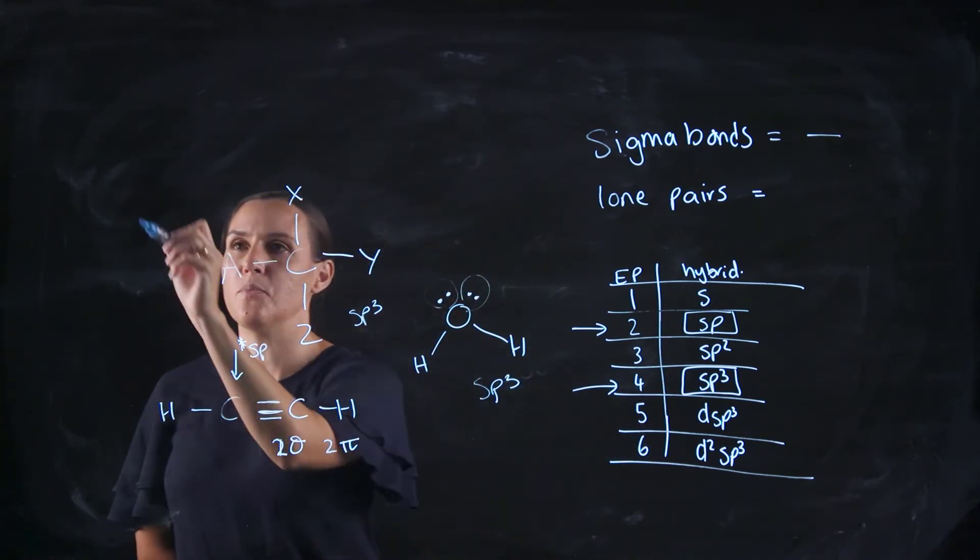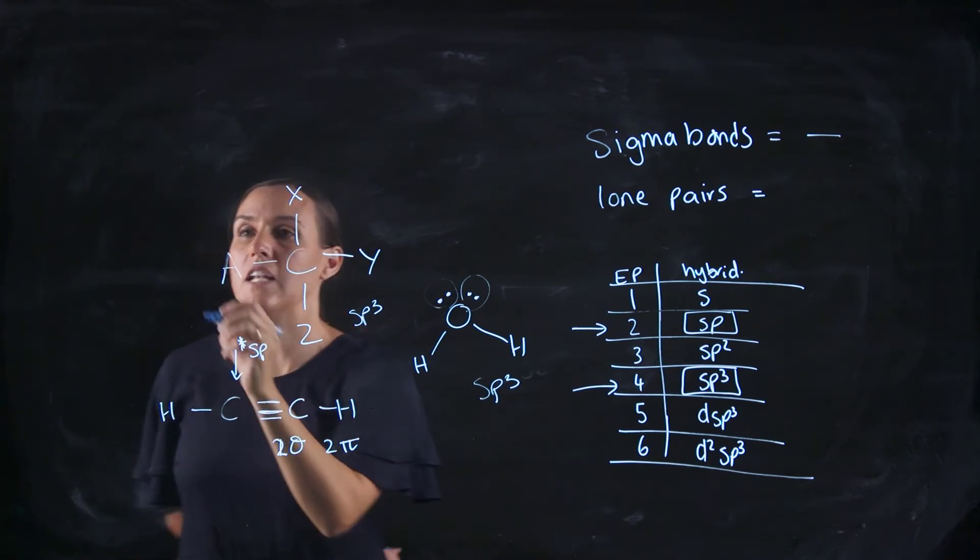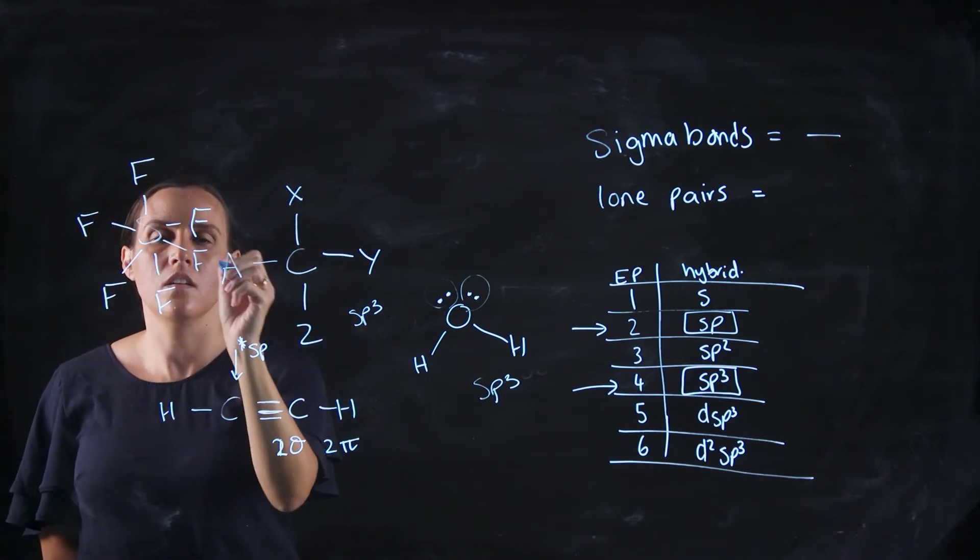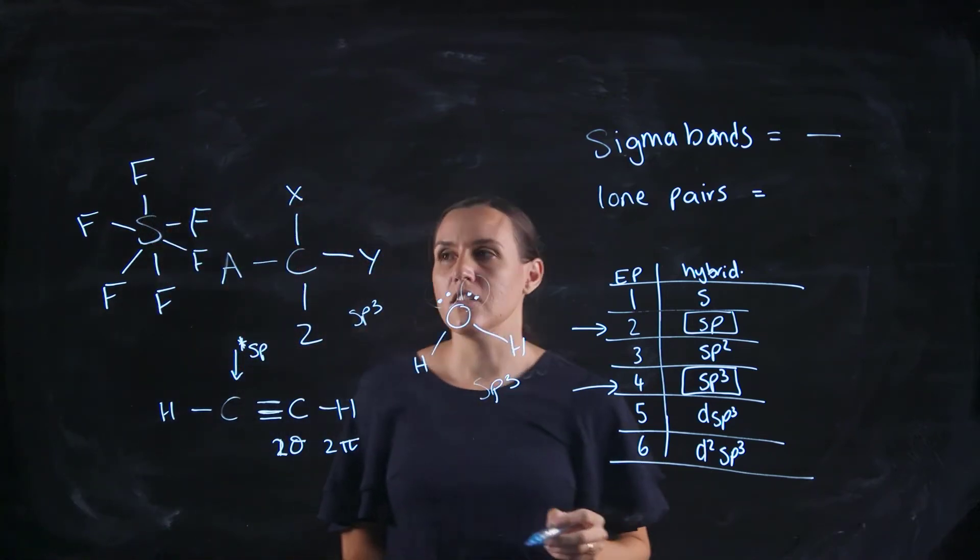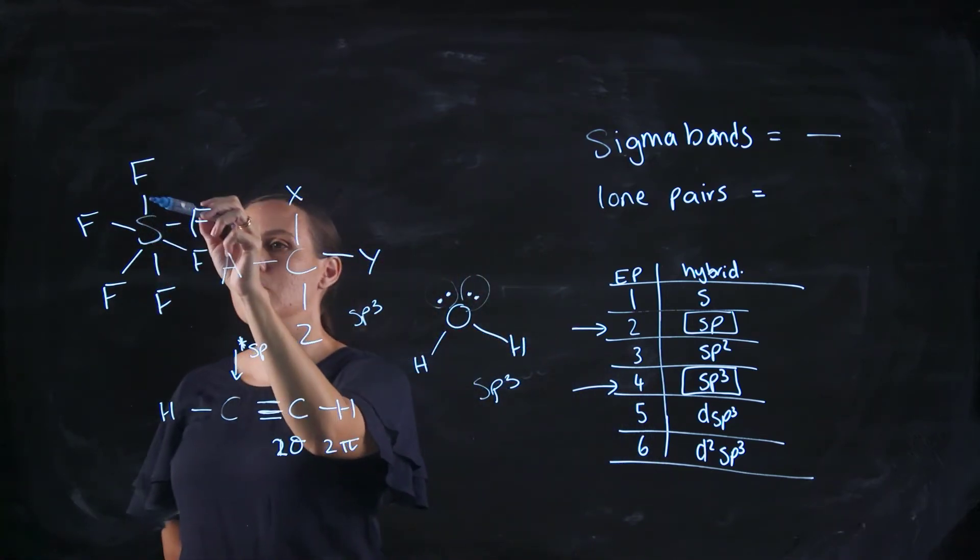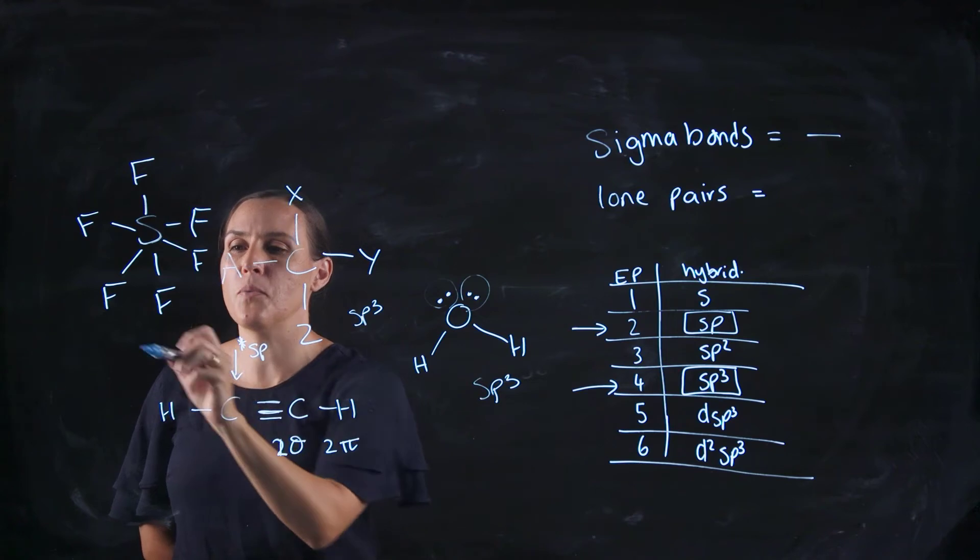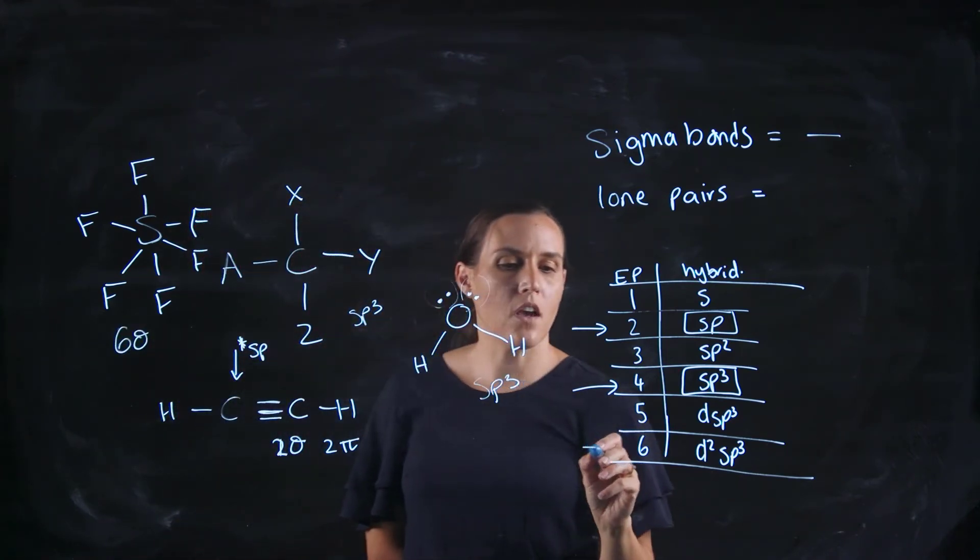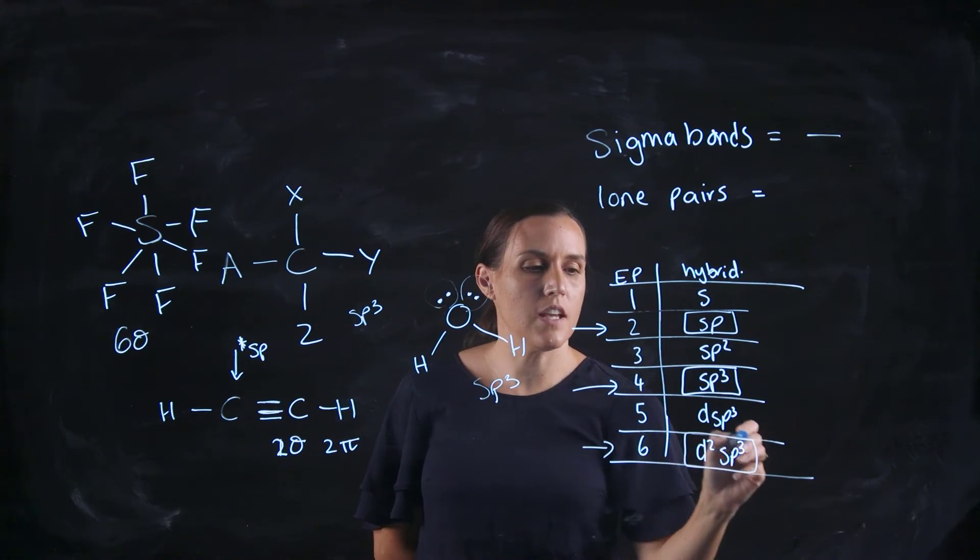So let's have a go at another example. Let's look at SF6. Okay, so SF6, we've got 1, 2, 3, 4, 5, 6 sigma bonds, so we would be going with d2sp3.